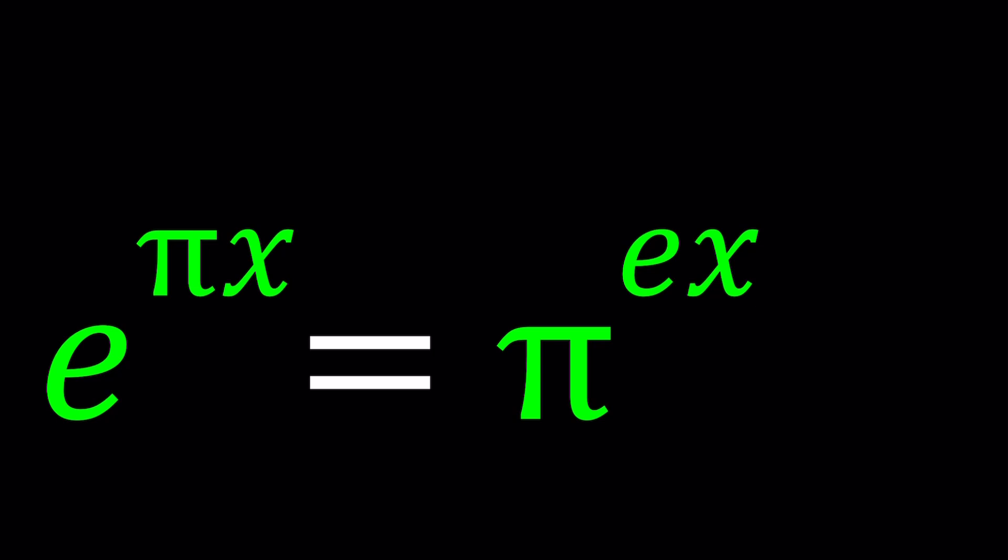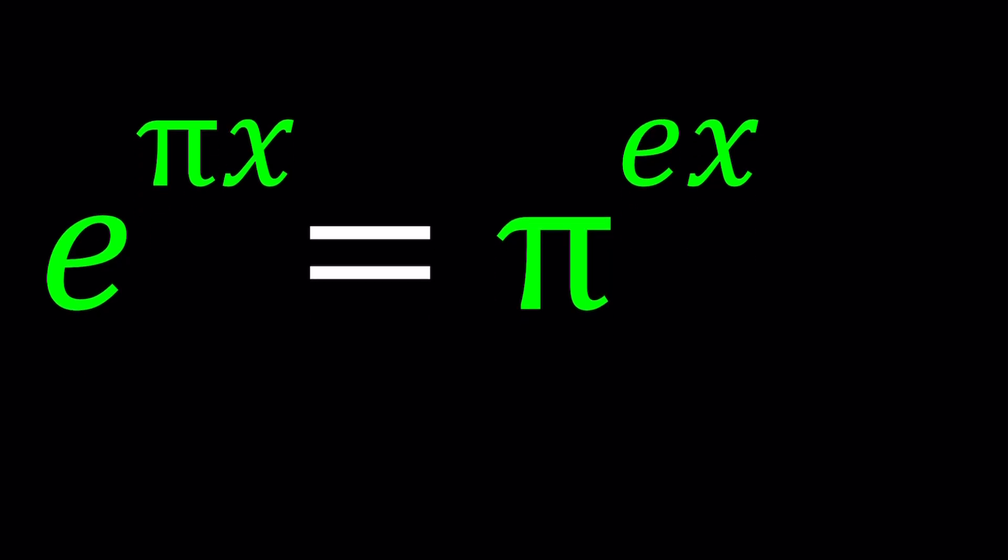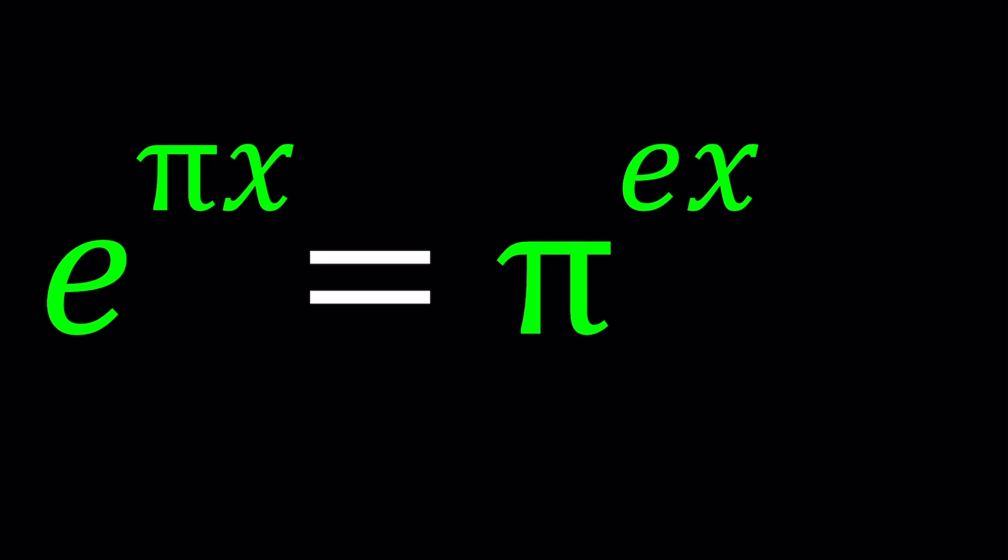So when you have an equation like this, you can think about the common exponent. They both have x in them, so we can write this as e to the power pi to the power x equals pi to the power e to the power x. And can we just cancel out x and then say e to the pi equals pi to the e? No. That's not what we're going to do. We're going to try to find an x value for which this equation is true.